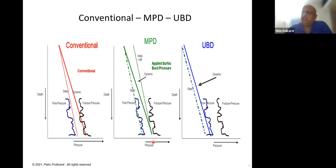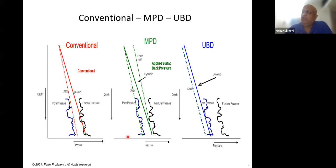In the next graph, with MPD, the static mud weight is planned to be lower — at or near pore pressure. When dynamic, with MPD you have the option to apply surface back pressure, so your pressure while circulating is still within this window and you are not exceeding the fracture pressure. That way you can safely carry out operations without encountering losses. This is the philosophy of MPD.